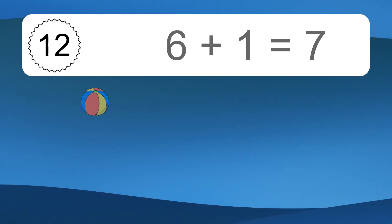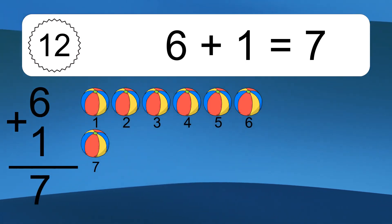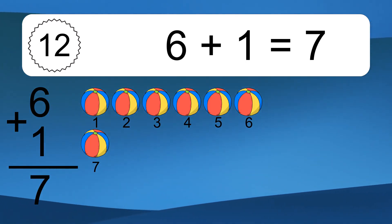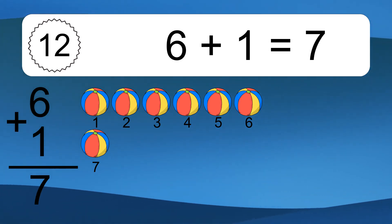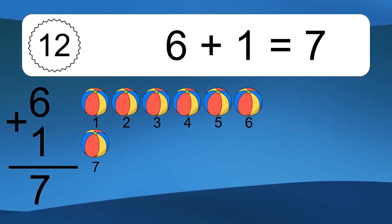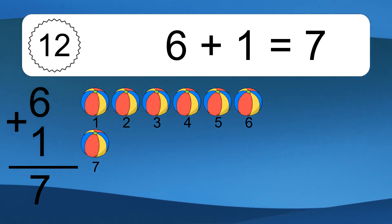6 plus 1 equals 7. Let's count it. 1, 2, 3, 4, 5, 6, 7.